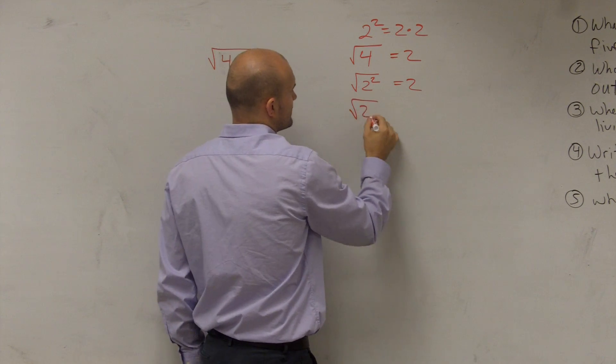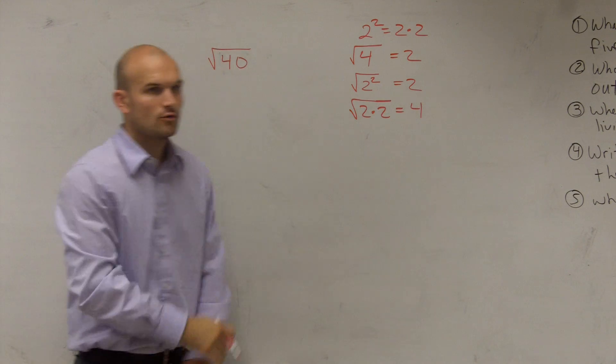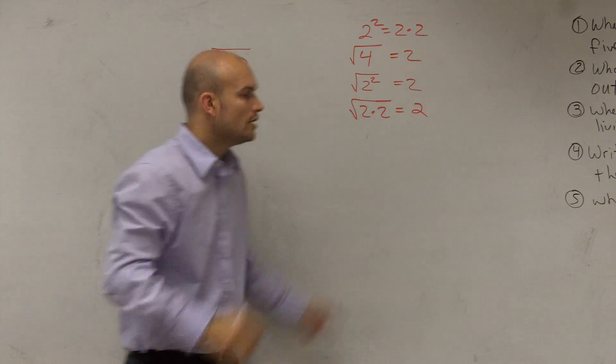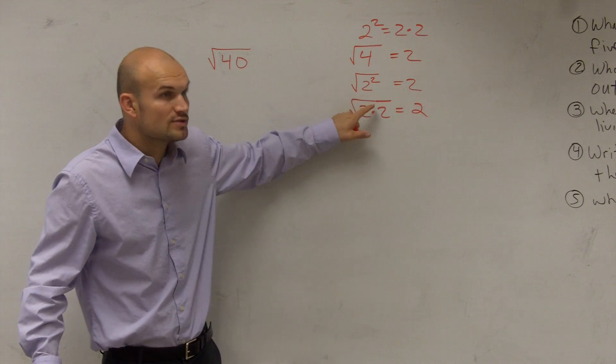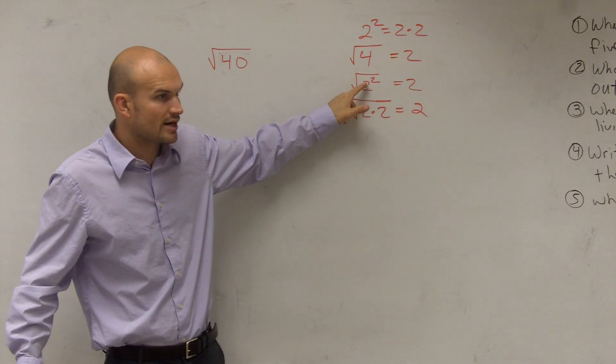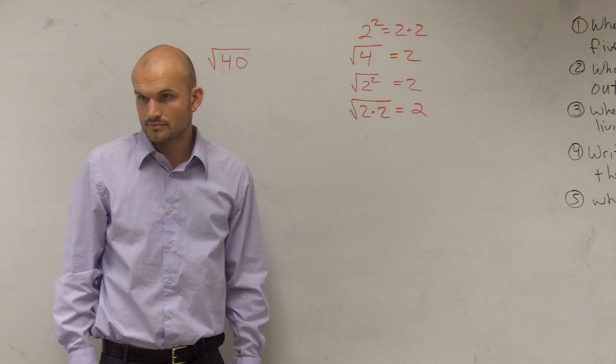We also write it like this: the square root of 2 times 2 equals 2. Would everybody agree? Obviously that doesn't mean 4, that equals 2. 2 times 2, the square root of 2 times 2 equals 2. Why is that? Well, 2 times 2 is 2 squared, 2 squared is 4. Everybody agree with me still?